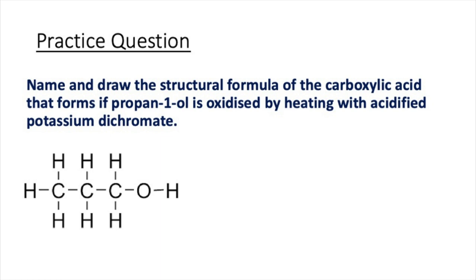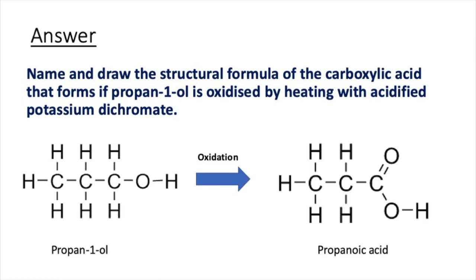Here's our next practice question: name and draw the structural formula of the carboxylic acid that forms if propan-1-ol is oxidized by heating with acidified potassium dichromate. If we oxidize propan-1-ol using acidified potassium dichromate, we get propanoic acid, and the structural formula of propanoic acid is drawn on this slide.